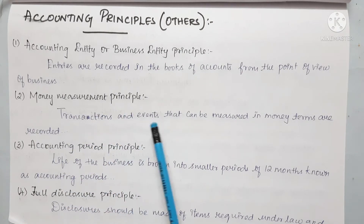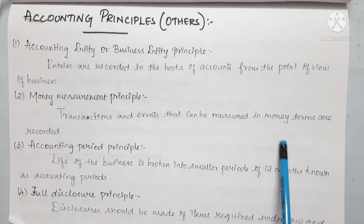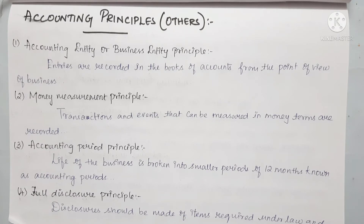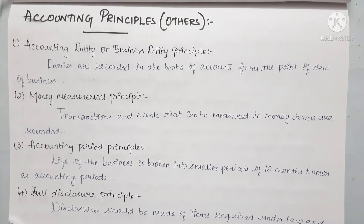Next is the money measurement principle: transactions and events that can be measured in money terms are recorded. We record all transactions in financial terms. Only financial transactions are recorded in accounts. For example, if a manager is appointed or employees are provided benefits, those events that cannot be measured in money are not recorded.